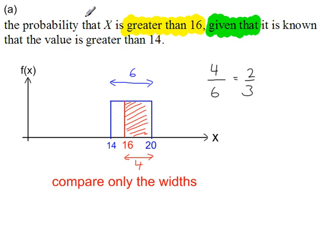So the probability that x is greater than 16, given that it is known that the value of x is greater than 14, is 2 thirds. So this time I did not use the formula that probability is width times height. It's convenient here just to look at the widths.